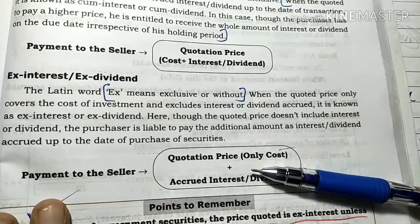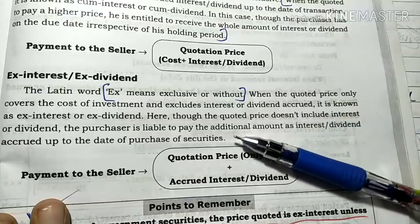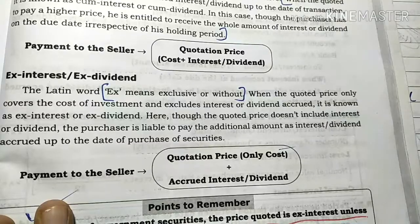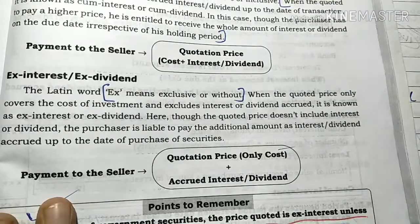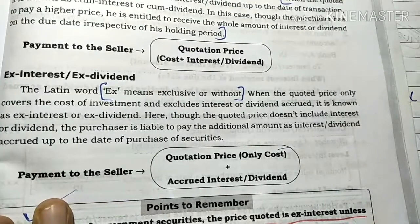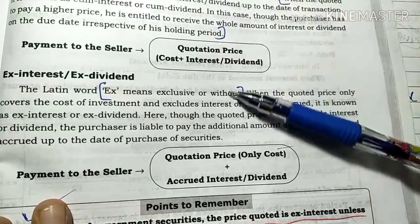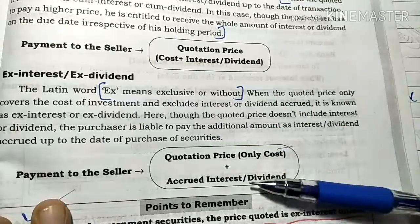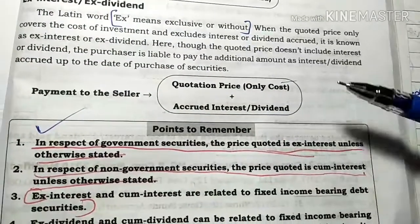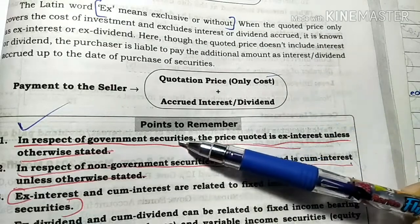There is an interest in that, but the cost is different. If you are talking about the cost in the quotation price, we need to give additional interest to the seller. The other state is not general for all. This is the first interest if you have a little interest in the class, because from the course of this there is a lot of interest.